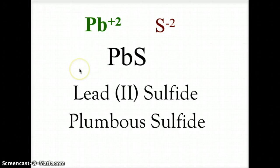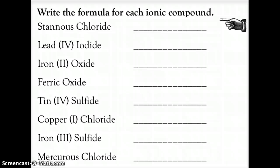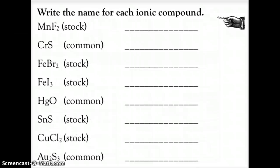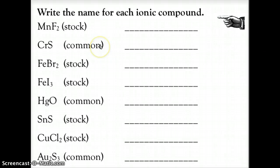I have two PDFs available for you on SOFIA. One asks you to take the name and turn it into a formula, and the other asks you to take the formula and put it into its name. I've indicated on that PDF whether to name it using Stock notation with the Roman numeral, or common using the -OUS or -IC suffix to represent the charge. Go ahead and print those out, work out your names and formulas, and then come back to see how you did.